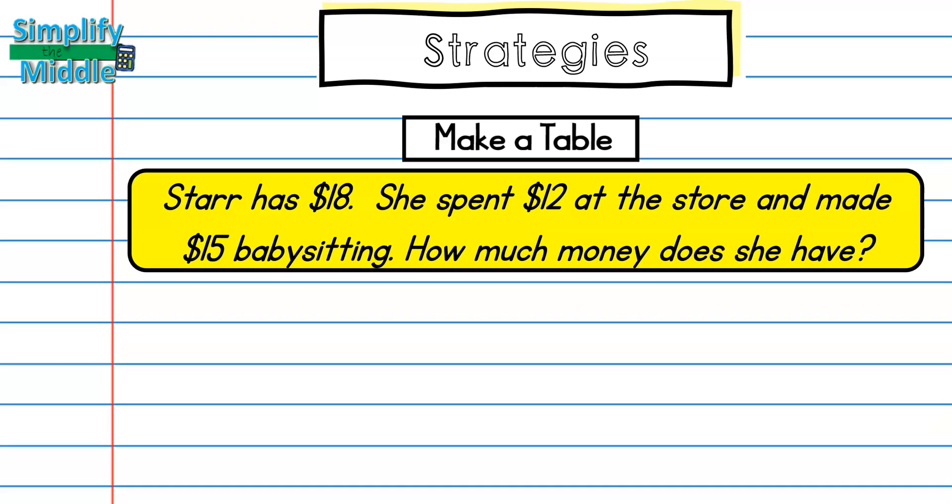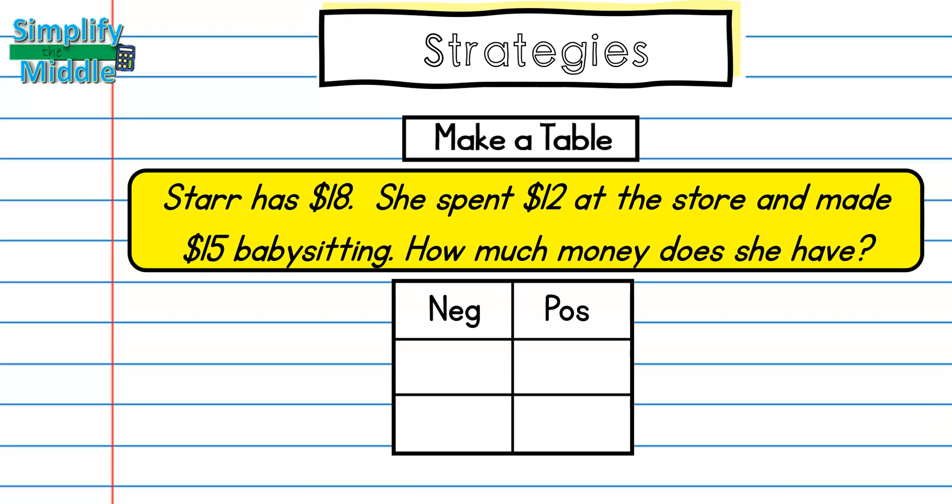If I make a table of my negative and positive amounts of money, it makes the problem really easy to work with. So I first know that Star has $18, so that's positive 18. She spent $12, so I'm going to put that in the negative column for minus 12. And then she made $15 babysitting, which I know is going to be a positive 15.